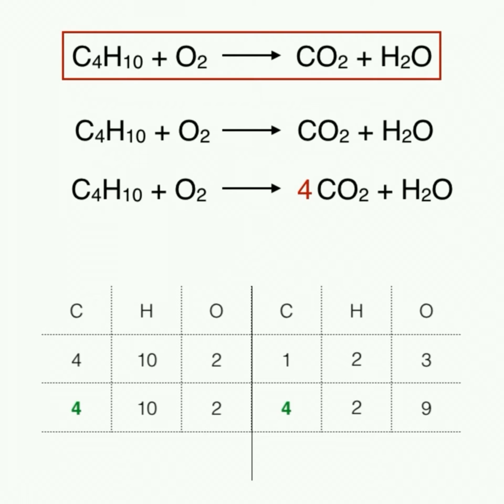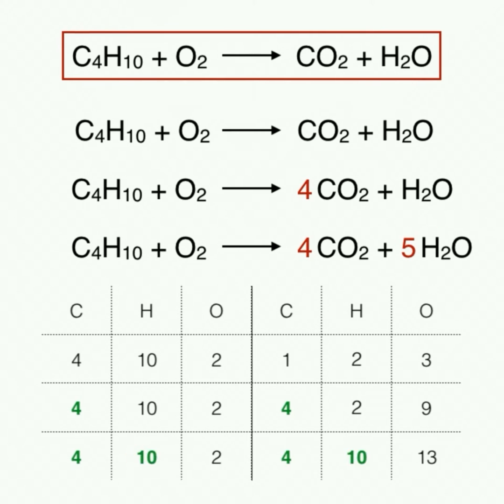Now let's work on hydrogen. Since there are 10 hydrogens on the left side, we must add a 5 in front of H2O to also achieve 10 hydrogens on the right side. Updating our tally, we can see both carbon and hydrogen are balanced, and we now have 13 oxygens on the right side.